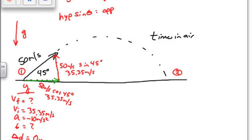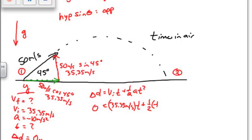So what equation do you think? I have three values. Delta d equals V initial times t plus one half a t squared. Very good. Plugging in our values. Change in d is zero. Initial velocity is 35.35 meters per second times the time, plus one half the acceleration, which is gravity, negative 10 meters per second squared, times the time squared.